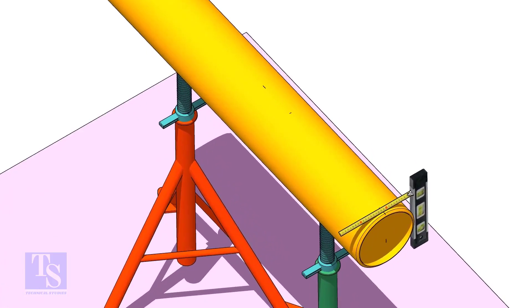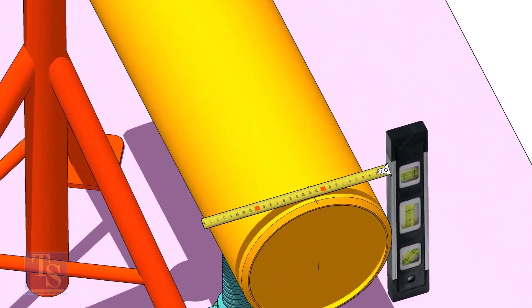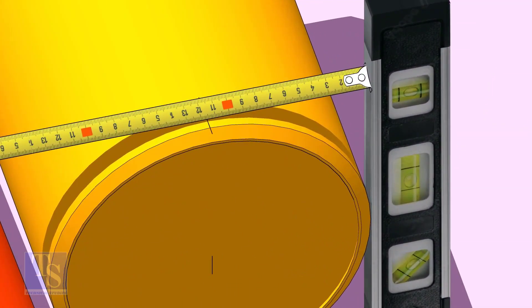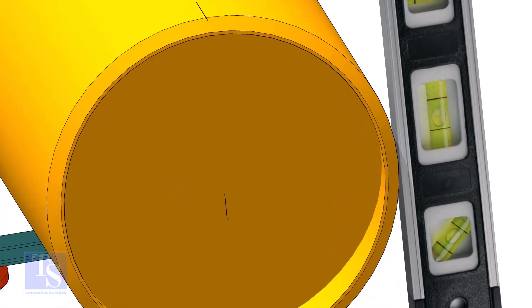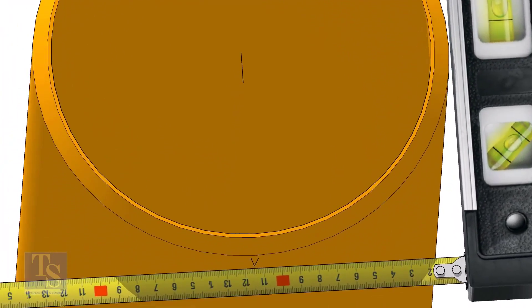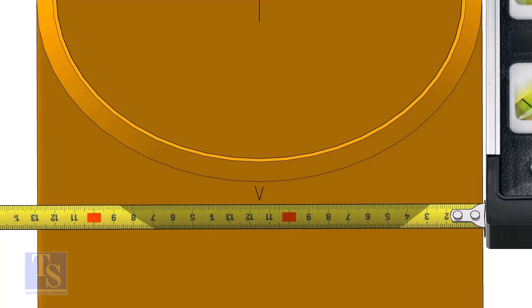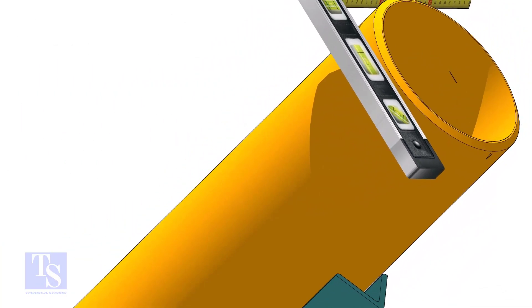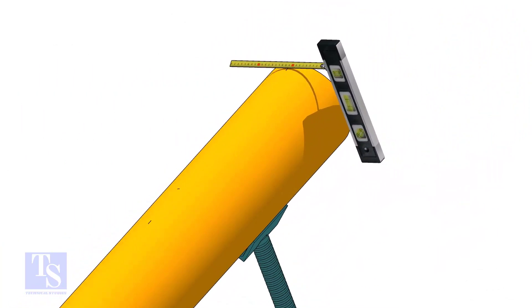Mark the centerline of the header on the top and the bottom. Hold a level bottle firmly and vertical at the side of the pipe as shown. Mark half OD at the top and the bottom side of the pipe. Cross check the dimension from the opposite side to ensure the marking is correct.